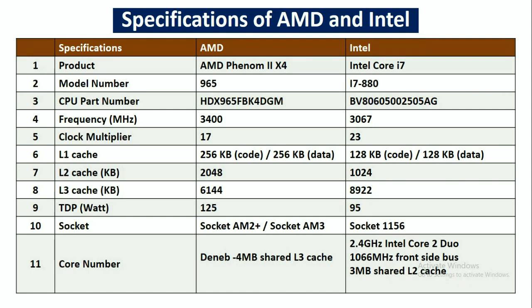The level 3 cache in KB for AMD processor is 6144 and for Intel it is 8192. The thermal design power in wattage for AMD processor is 125, and for Intel it is 95. And the socket for AMD is socket AM2 or socket AM3, and for Intel processor it is socket 1156.